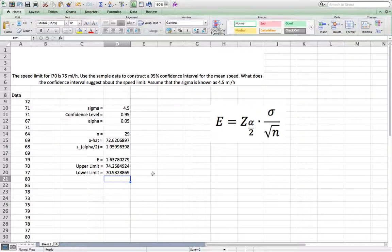So our 95 percent confidence interval will be from 70.98 to 74.26. So we can conclude that we have 95 percent confidence that the actual population mean will fall within this confidence interval.